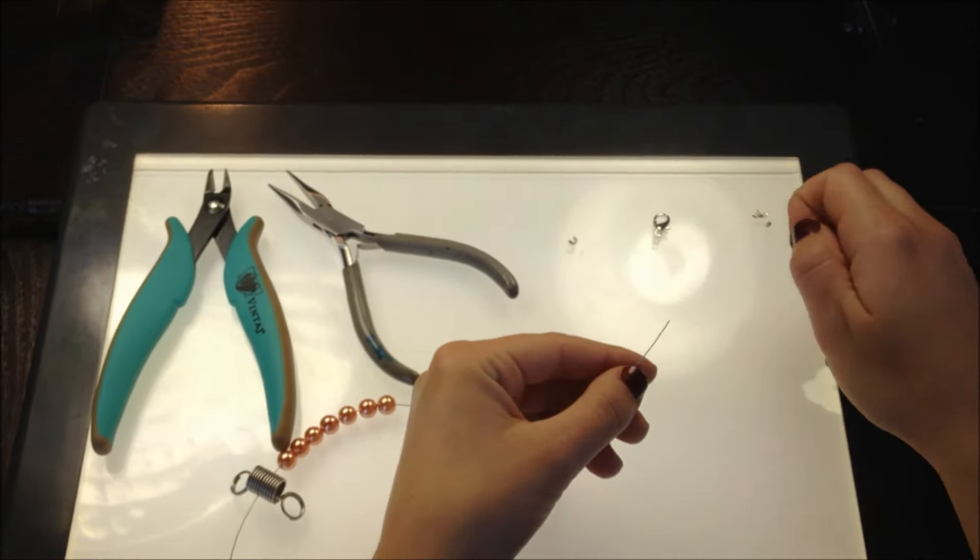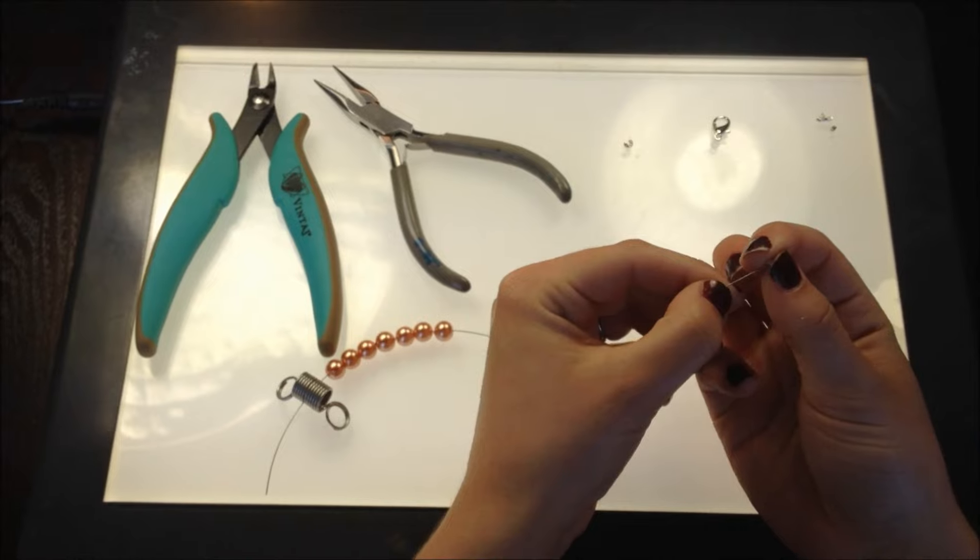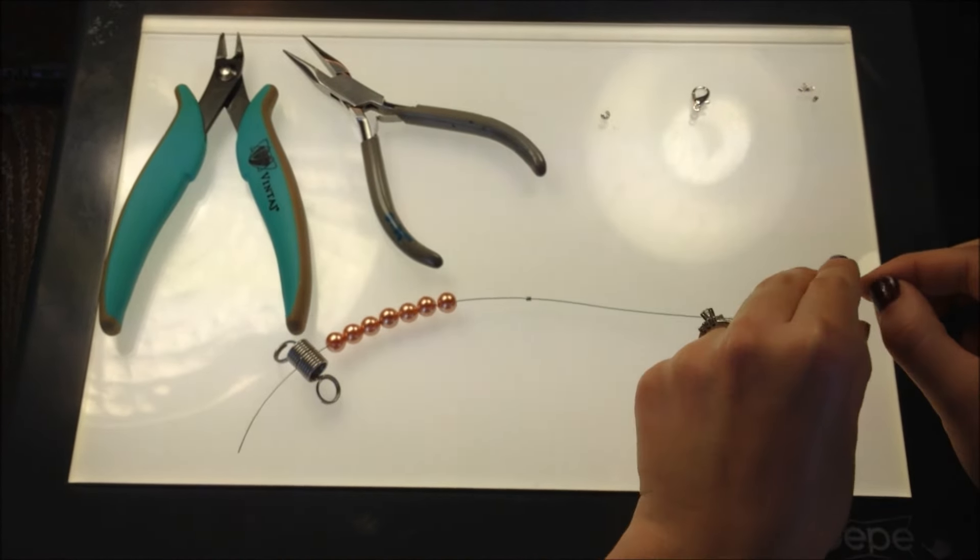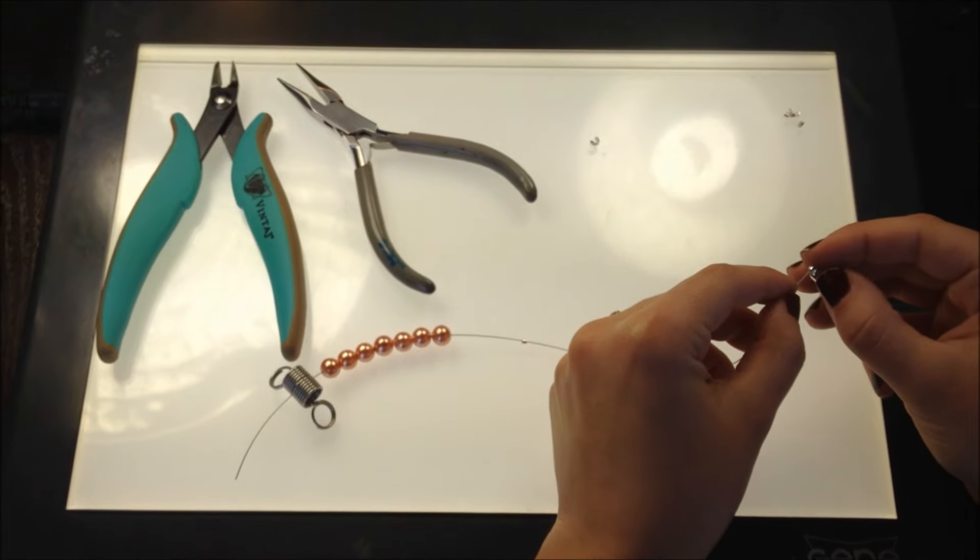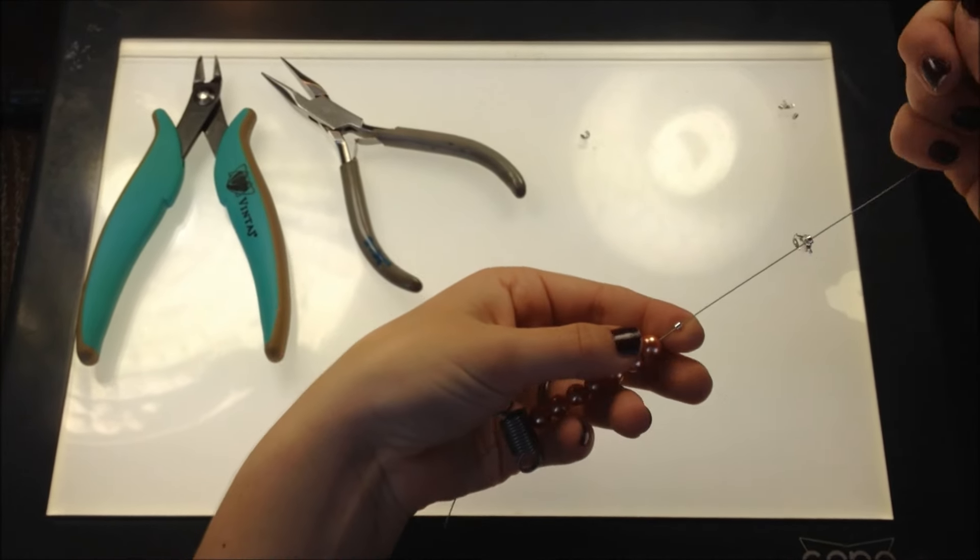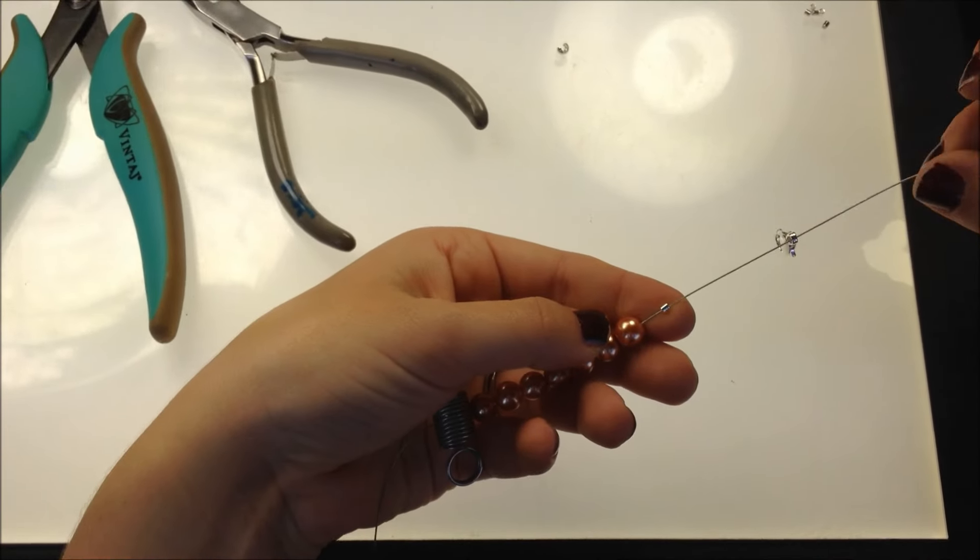First, take your crimp bead and slide it over the wire. Second, take your lobster claw and slide it over the wire. You always want your crimp bead to be in between your beads and your lobster claw.